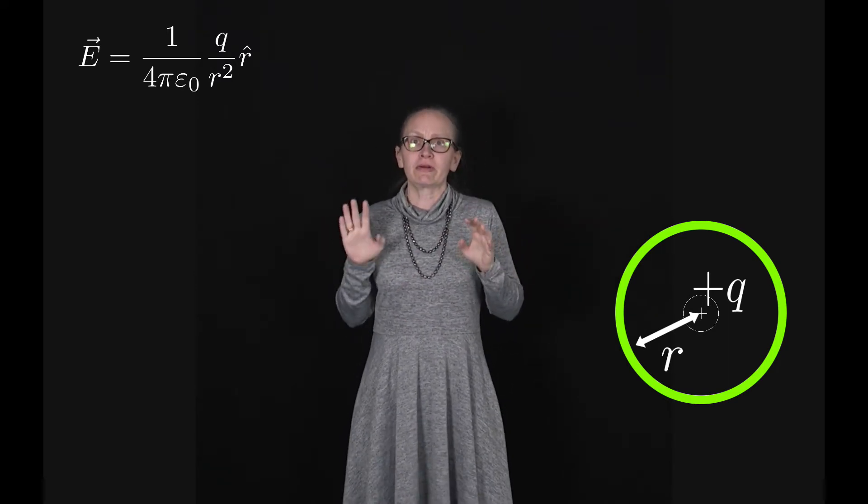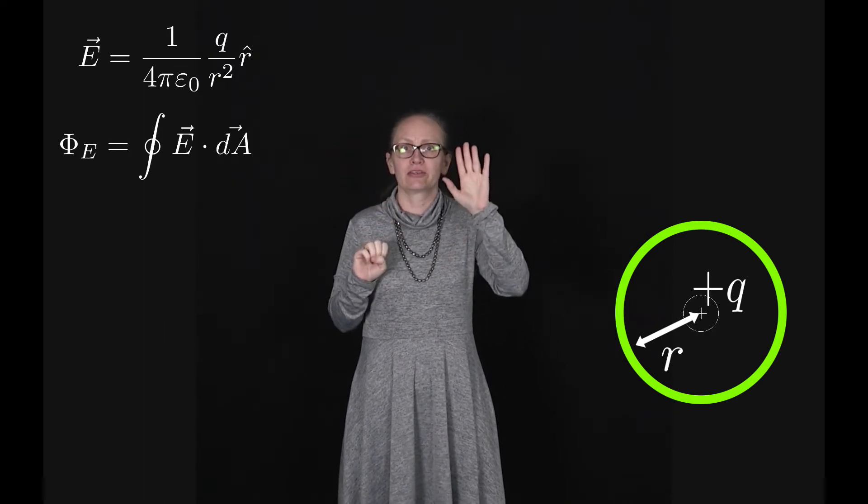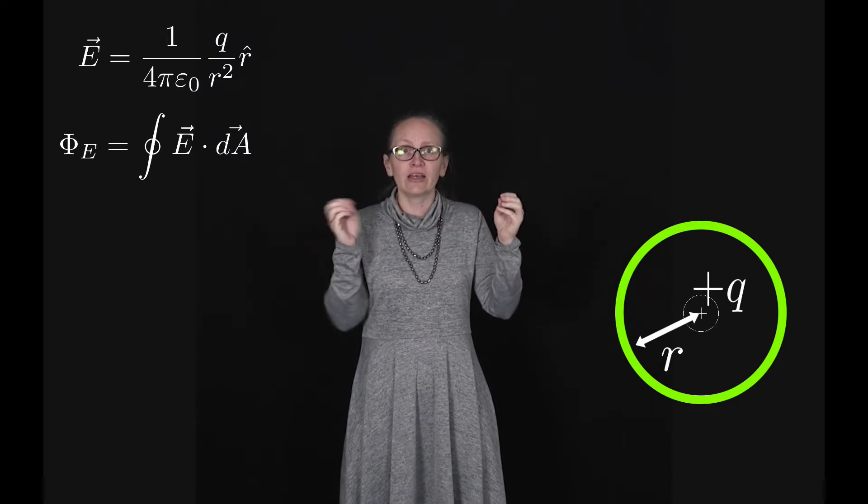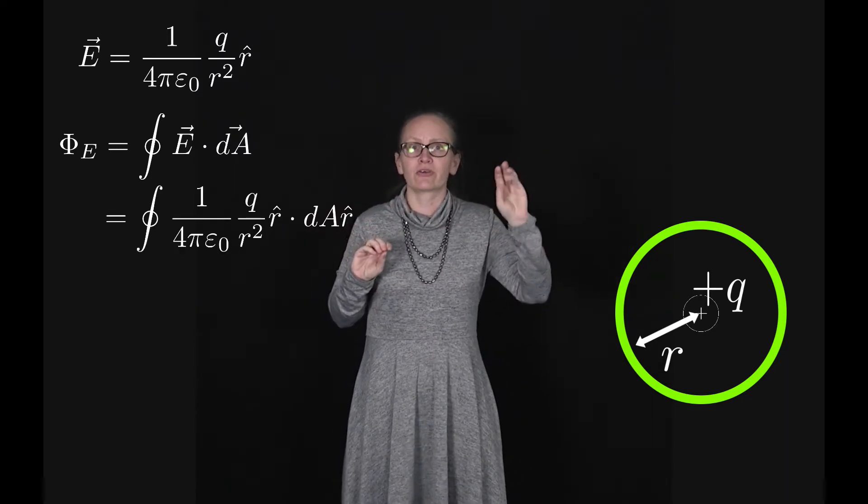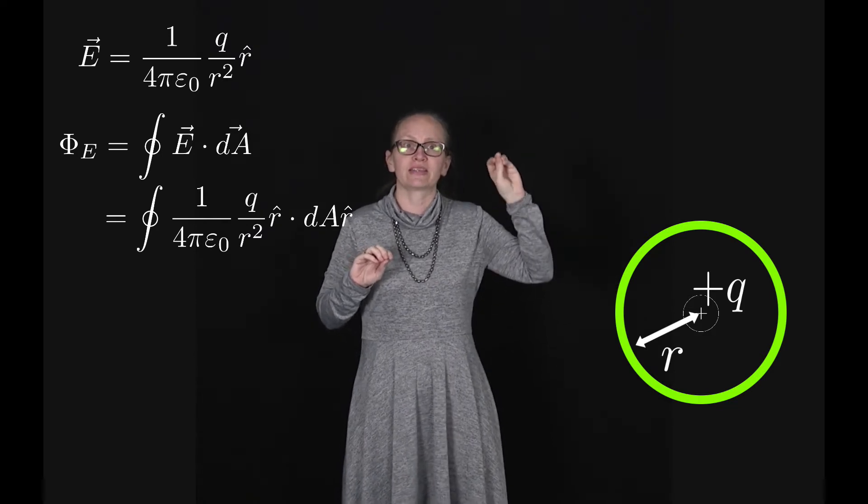Now if we want to calculate the flux, we can use our equation that the electric flux is equal to the integral of E dot dA, and we can now substitute in E. So we've got that this is equal to the integral of 1 over 4π epsilon naught Q over r squared dA.